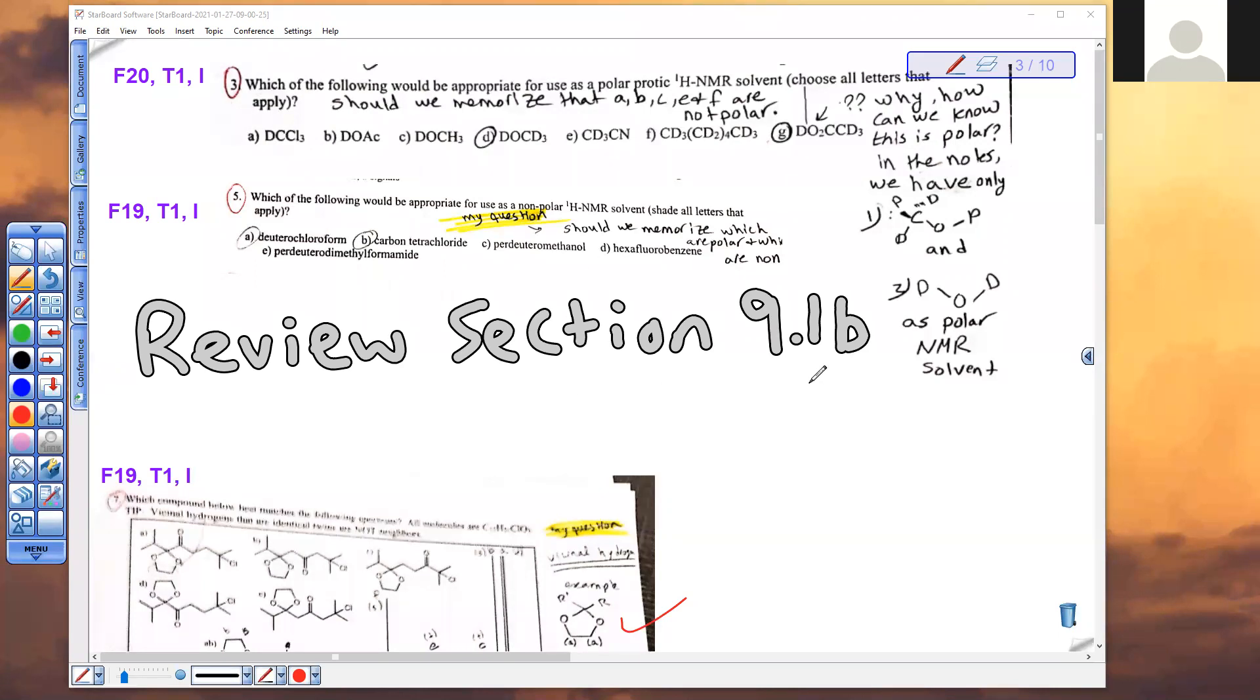Remember there were three categories of solvents: polar protic, non-polar, and polar aprotic. So what you want to do is go back to section 9.1b, replace in every one of those solvents every single hydrogen you see with a deuterium, and now you have NMR solvents. And the categories match. Replacing H with deuterium does not change the polarity of the molecule.